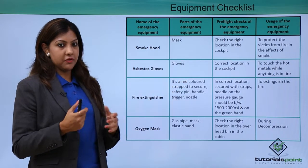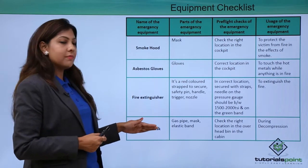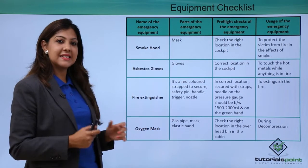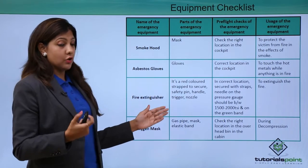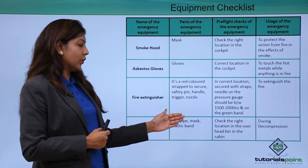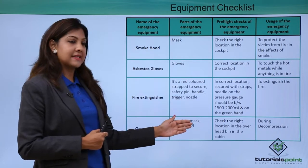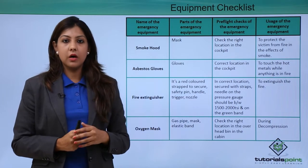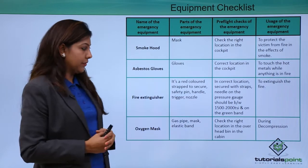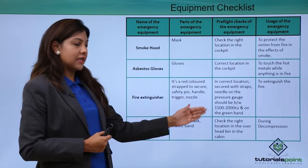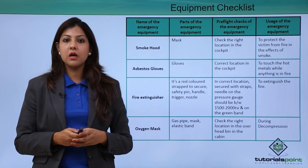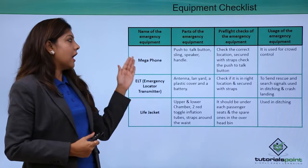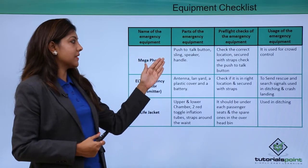The oxygen mask has a gas pipe, mask, and elastic band. Its correct location is in the overhead bin inside the cabin, where it is easily accessible to the cabin crew. It is used during decompression, and the oxygen bottle is also checked as part of this process.